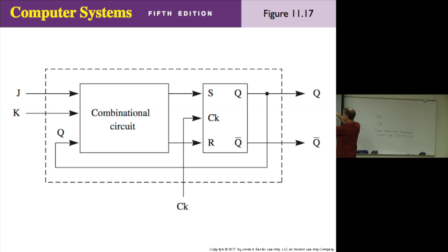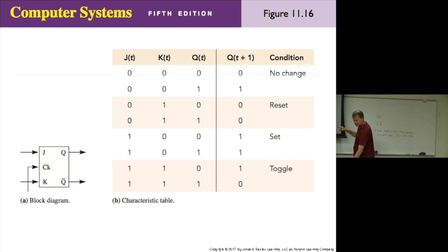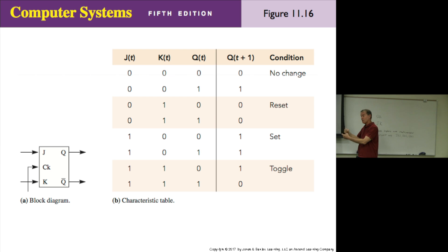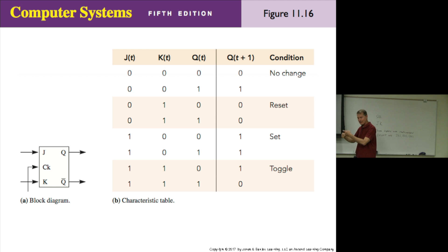You can imagine a dotted box around the whole thing, with the clock coming in from the bottom and JK coming in, and Q and Q-bar coming out to the right. That whole thing has to behave like the characteristic table in figure 11.16. The characteristic table tells you: what are the inputs at time T and what is the state at time T, and then when a clock pulse comes along, it tells you the results at time T+1. The master-slave design principle is what guarantees it won't make more than one transition.